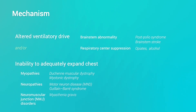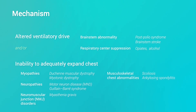Chest wall expansion is also affected by musculoskeletal conditions such as scoliosis and severe ankylosing spondylitis. Severe obstructive airway disease also impairs ventilation, and the effect is exacerbated by coexisting OSA, obesity, and/or muscle weakness.